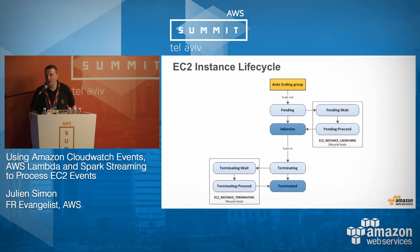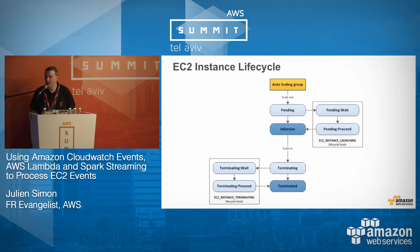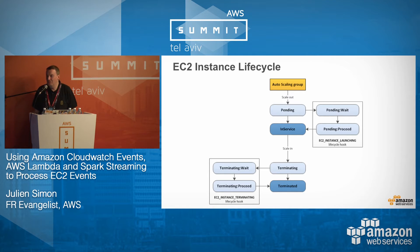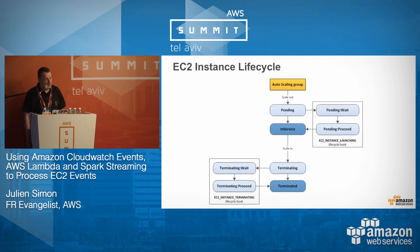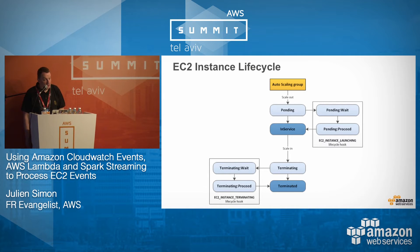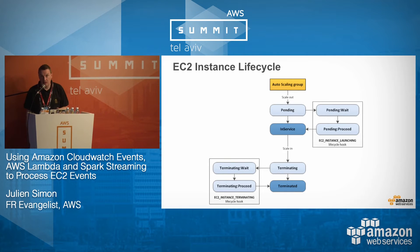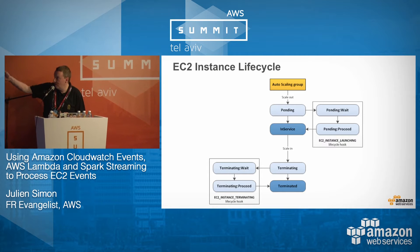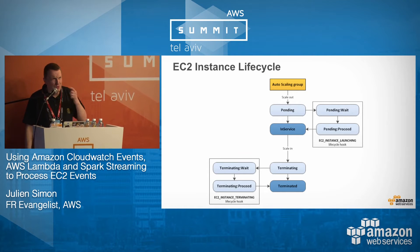First of all, let's talk about EC2 lifecycle events. This is something that usually you don't really look at. Basically, this is the normal lifecycle of an EC2 instance. Some states are well known — you see them in the console when you start and stop instances, like pending, in-service, terminating, and terminated.